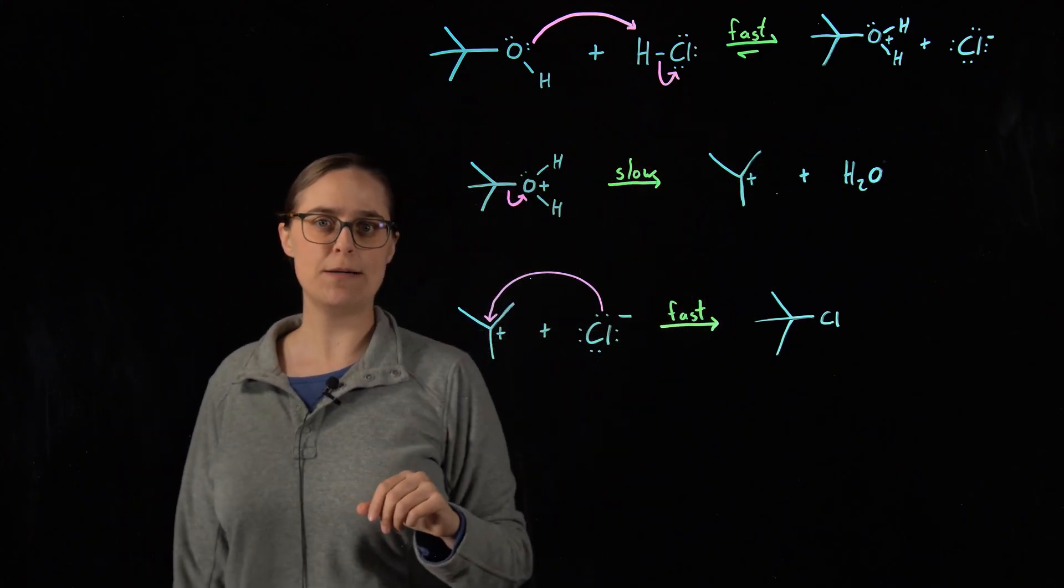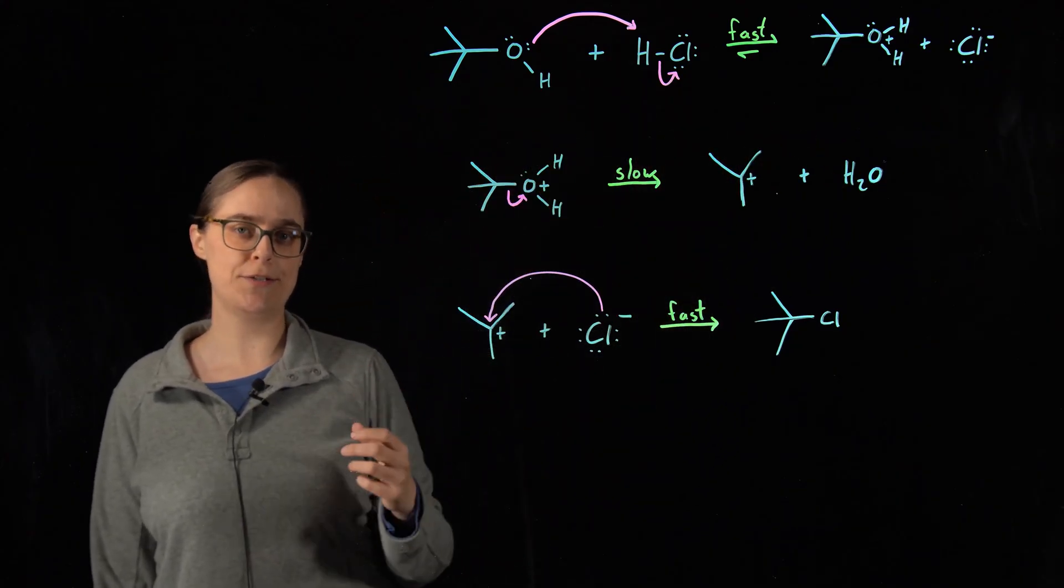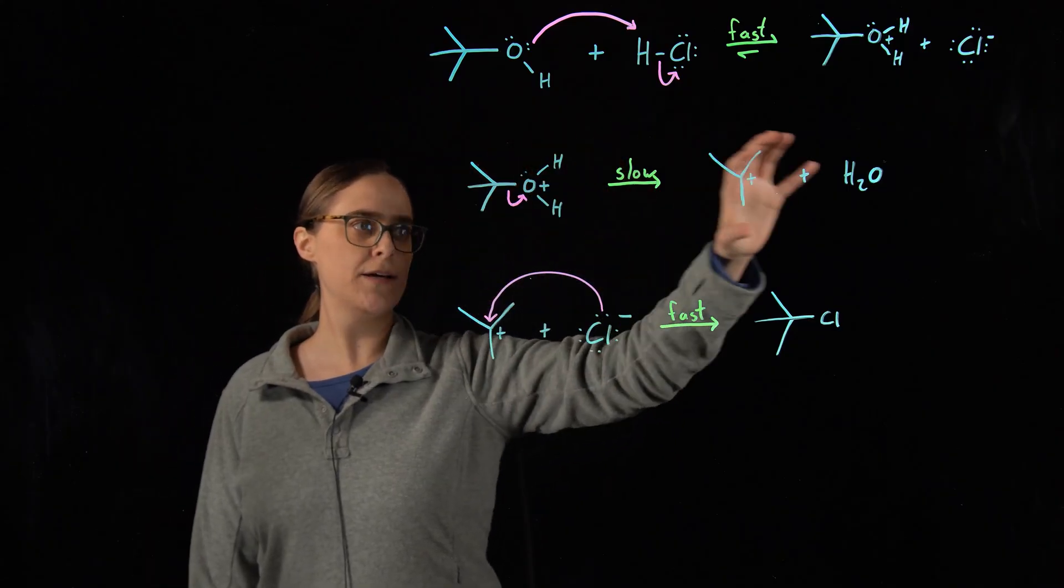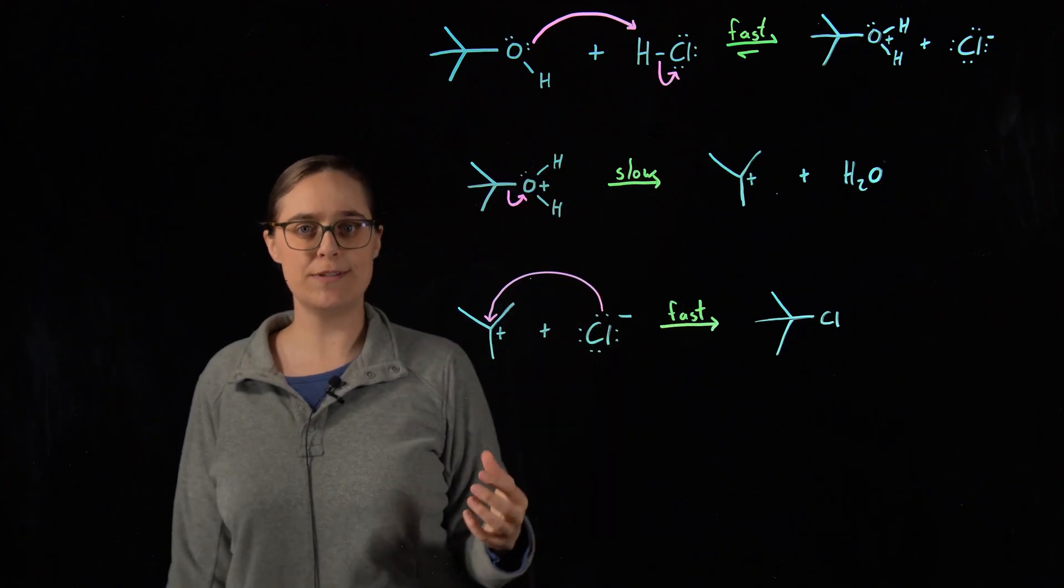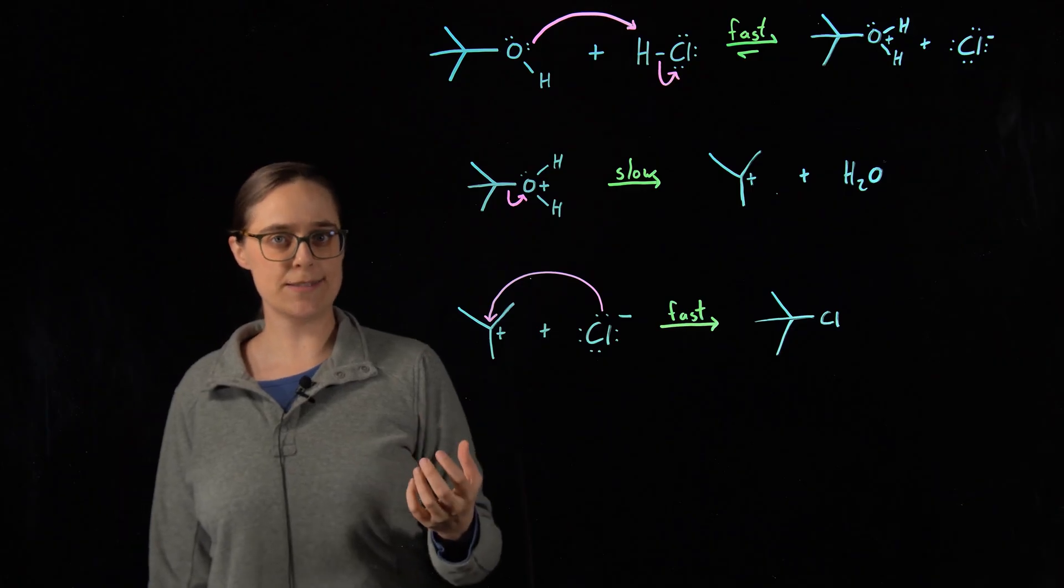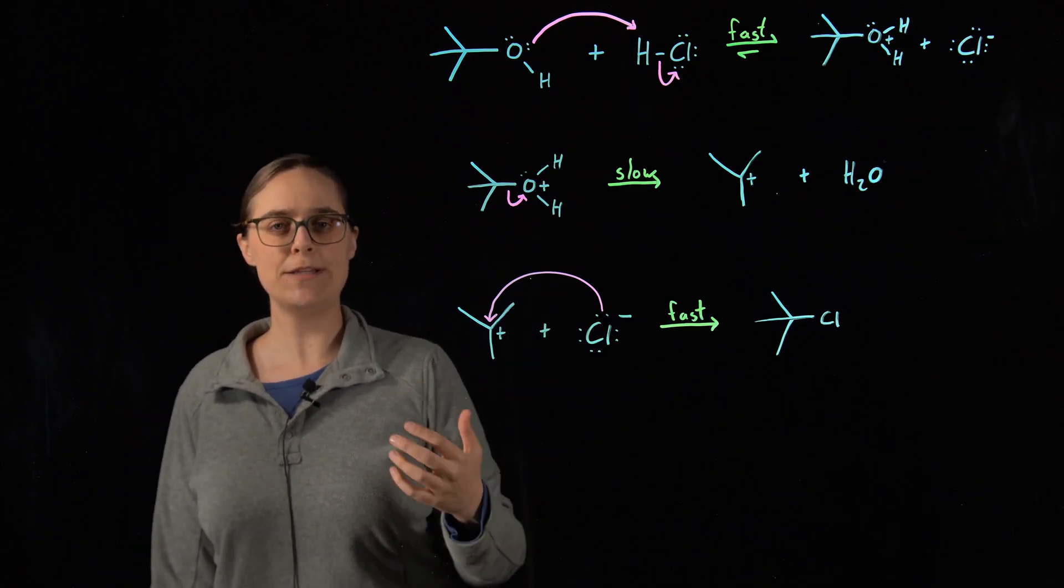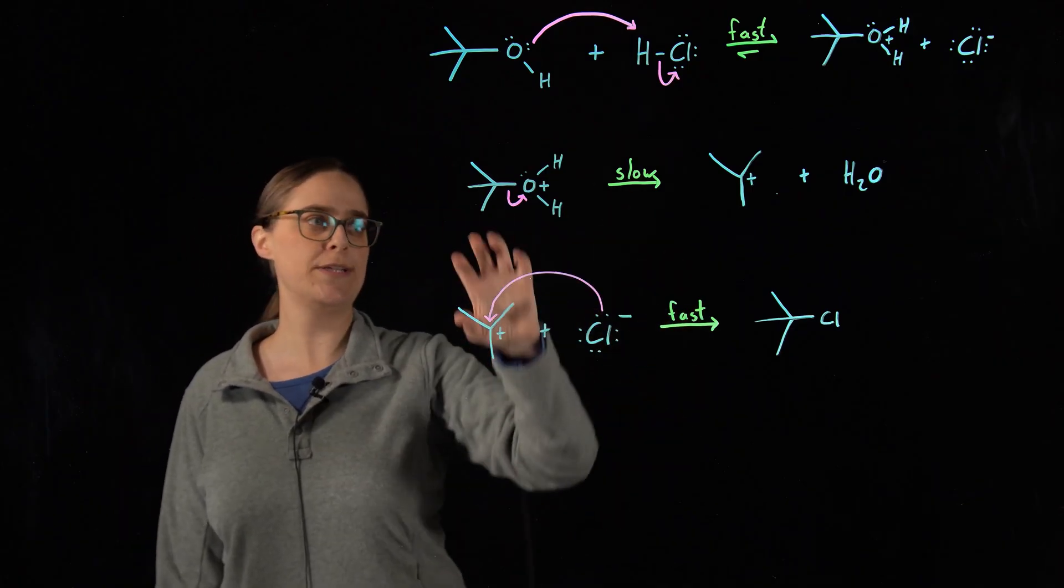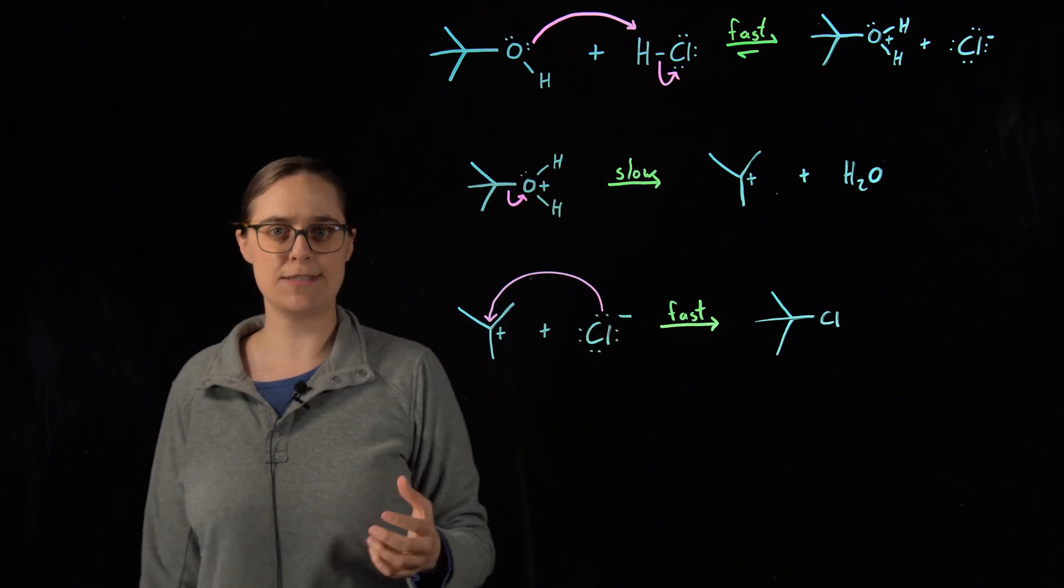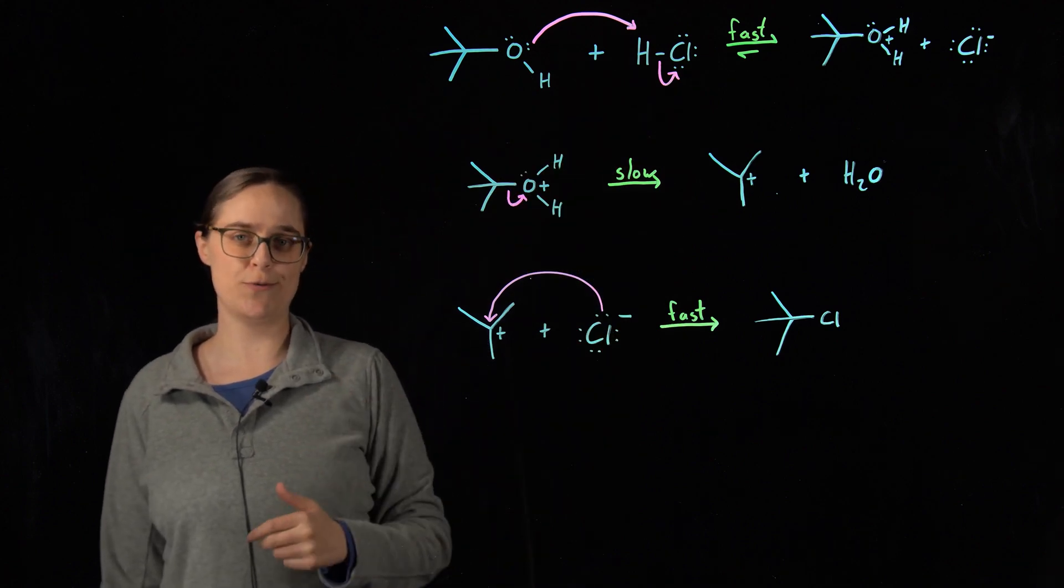The slow step can also be called the rate determining step. Think of it as a bottleneck. This step is the most difficult to occur. It's the slowest. The rate of the overall reaction is going to be the same as the rate of this slow step. That's why it determines the rate.